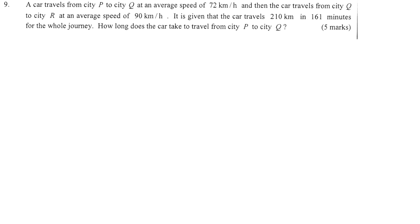In the question, there are some sentence questions and then they say that a car travels from P to Q at this speed and then later on continues from City Q to City R at an average speed of 90 km per hour. And then after that, they tell you that it travels 210 km in 161 minutes for the whole journey.